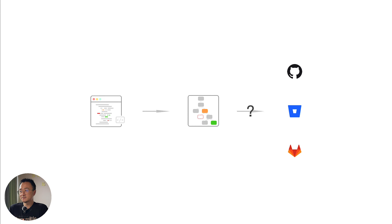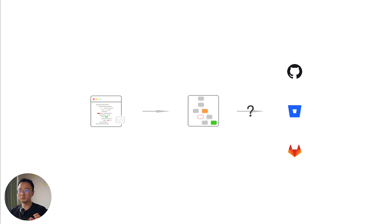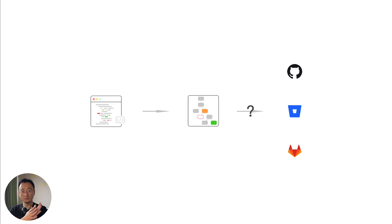Hypermode has addressed this issue very well. It manages all the transforms in a library called the transform library. You basically define all your codemods into a library, and on the other hand it connects to different codebases that need the changes applied. You can define what you want to apply to which repo. That is a super convenient tool, especially for people who manage a lot of codemods and need to apply them across a variety of codebases. I have a concrete example in this video, but before we dive in let's have a basic understanding of how Hypermode works.